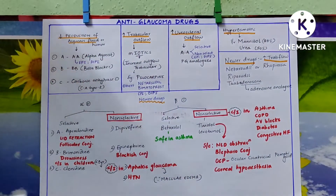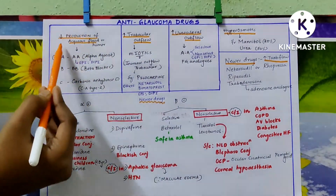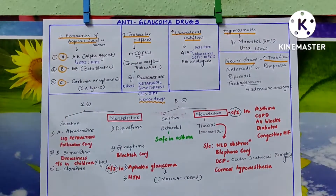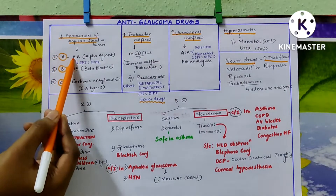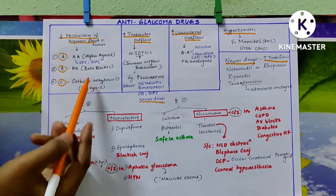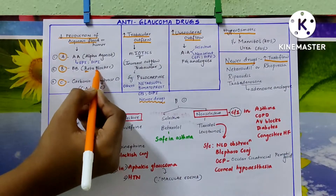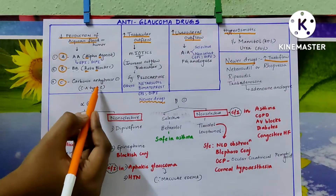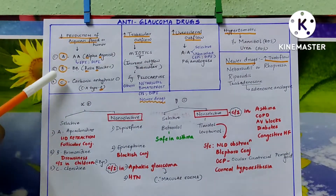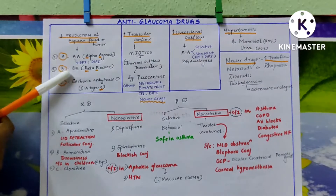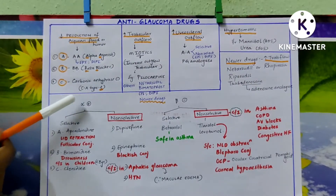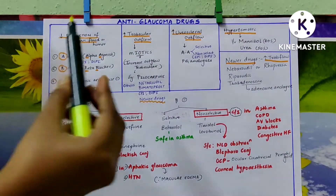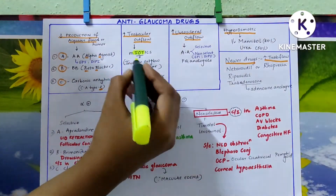For decreased production of aqueous humor, the mnemonic is A, B, and C: A is alpha agonists, B is beta blockers, and C is carbonic anhydrase inhibitors. Don't confuse — it is alpha agonists and beta blockers, not alpha blockers or beta agonists. In carbonic anhydrase inhibitors, it is specifically type 2.